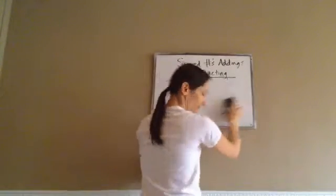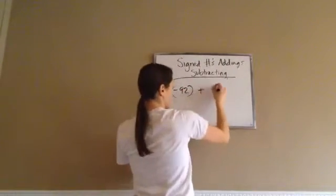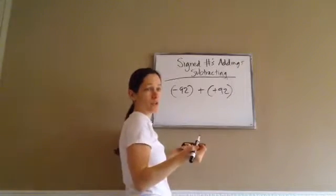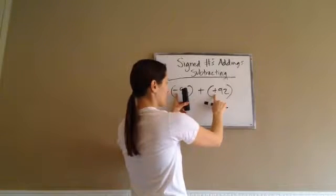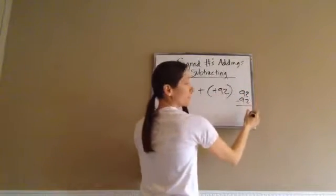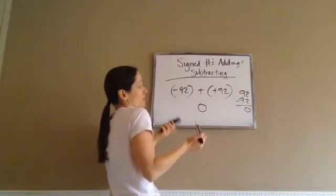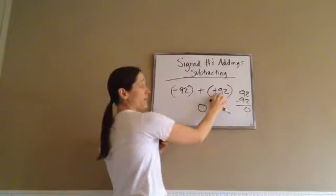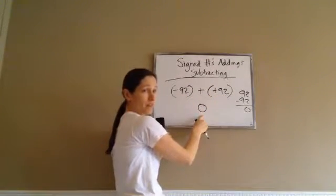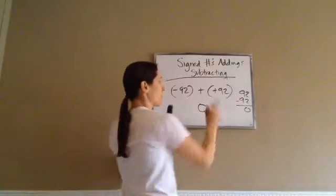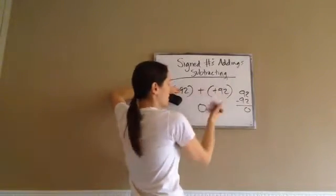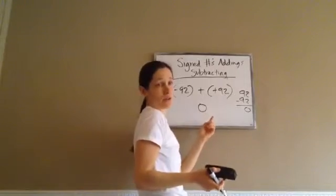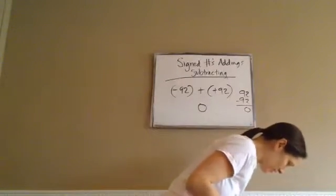Negative 92 plus a positive 92. They're different signs, so you subtract: 92 minus 92 is zero. You take the sign of the biggest number — they're both 92, so nothing happens. Zero has no negative or positive — you can't have negative zero. There is no positive zero either; it's just zero.